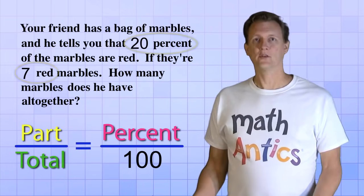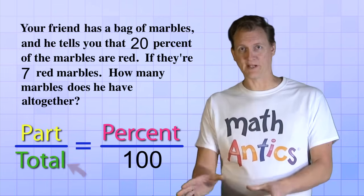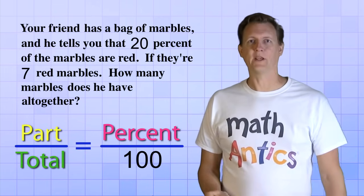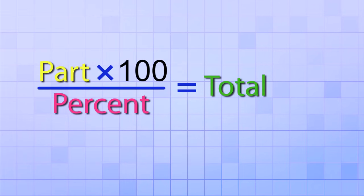Alright then, so how do we figure out what the total is? Well, using a little algebra, which you don't need to know how to do right here, we can rearrange our percent equation like this. What this new form of the equation tells us is that if we take the part and multiply it by 100, and then we divide that by the percent, we'll get the total.